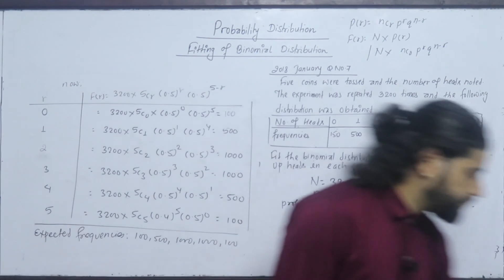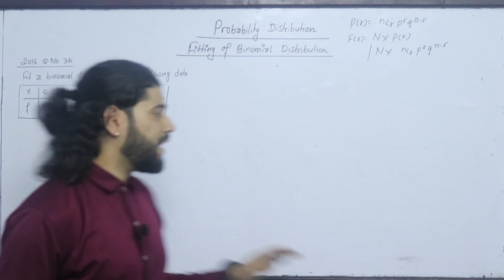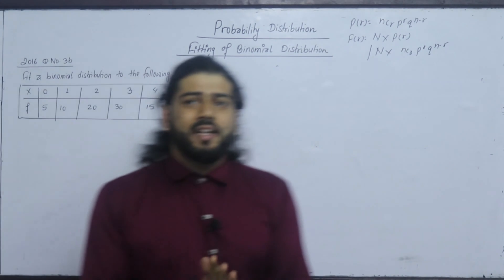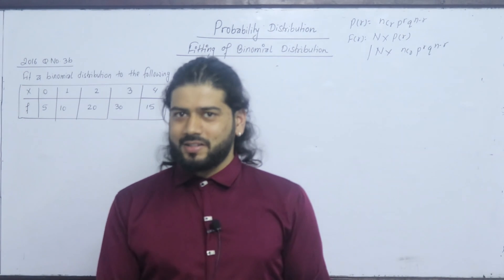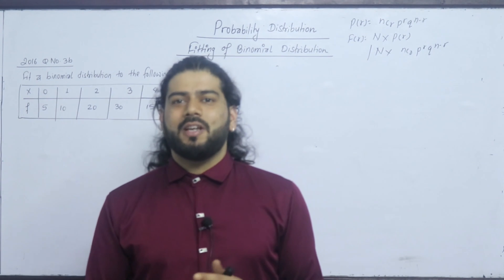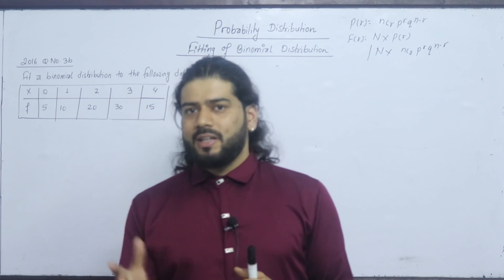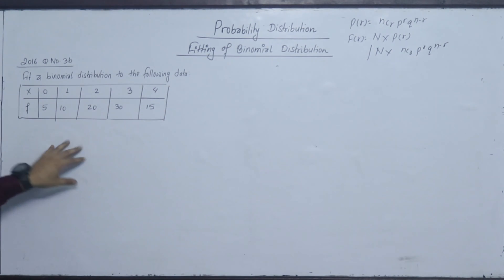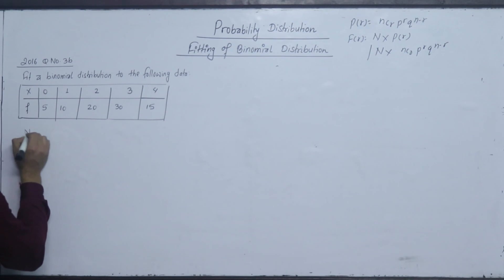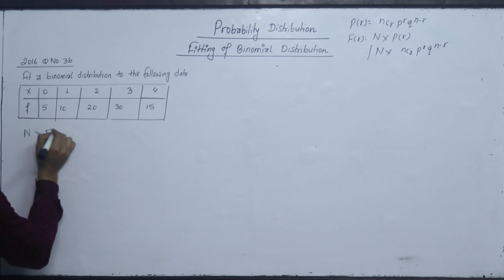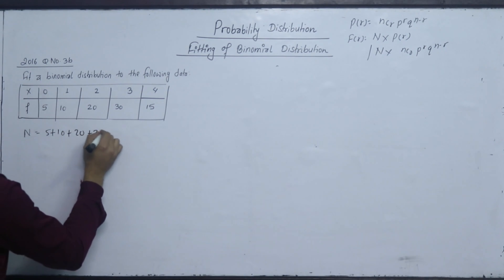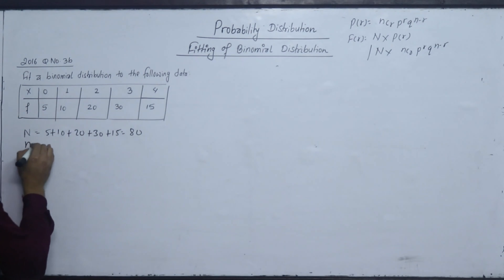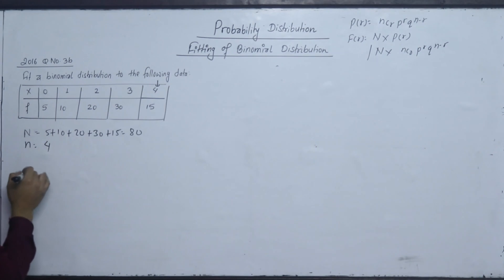I am going to ask the question about fitting the Binomial Distribution to the following data. The probability of getting a head is taken as 0.5, so P equals 0.5 and Q equals 0.5. We have done a few experiments. The observed frequencies are 5, 10, 20, 30, 15, for small n equal to 4.